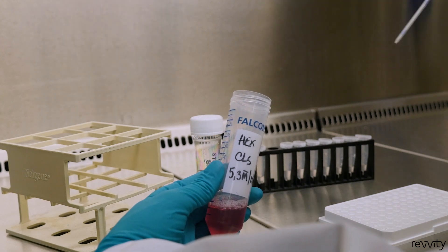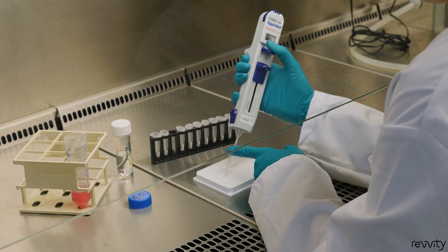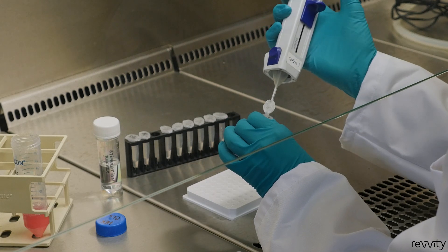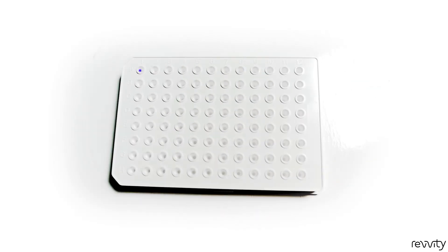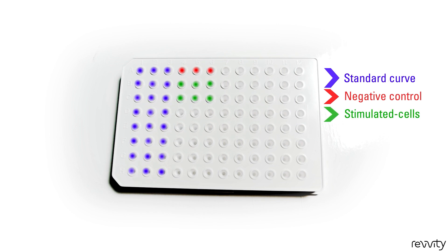To begin your cell-based assay protocol, dispense 5 microliters of cells in each well. Add 5 microliters of test compounds in different concentrations. Follow the protocol's recommendations for appropriate controls.